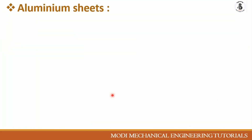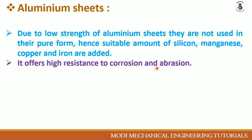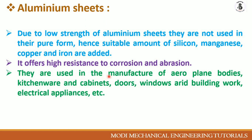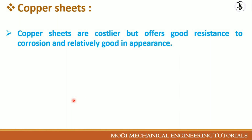For aluminium sheets, due to the low strength of pure aluminium, it is not used in pure form. Suitable amounts of silicon, manganese, copper, and iron are added to enhance its mechanical properties. This gives a material with low density but high strength. Such aluminium alloys offer high resistance to corrosion and abrasion, and are used in the manufacture of aeroplane bodies, kitchenware, cabinets, doors, windows, building work, electrical appliances, and many more.